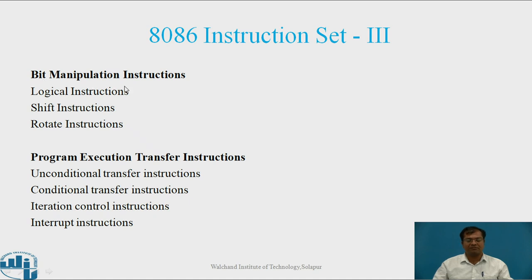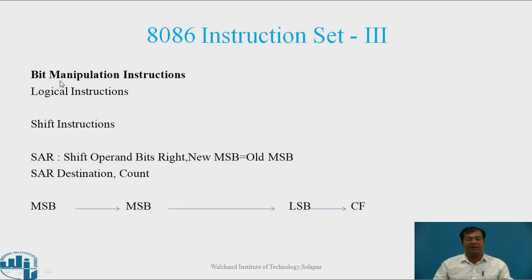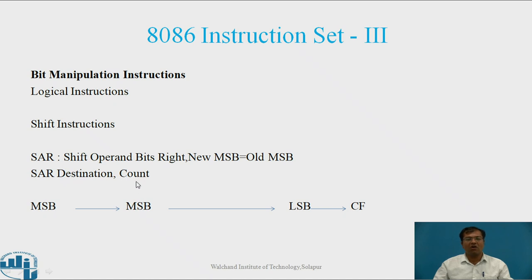Under bit manipulation instructions, in the previous lecture we covered logical instructions. Now I will move to the second type: shift instructions. The first one is SAR, which indicates shift operand bits right, and the new MSB is equal to the old MSB. The syntax for SAR is: SAR destination, count. This count decides how many bit positions will be shifted.